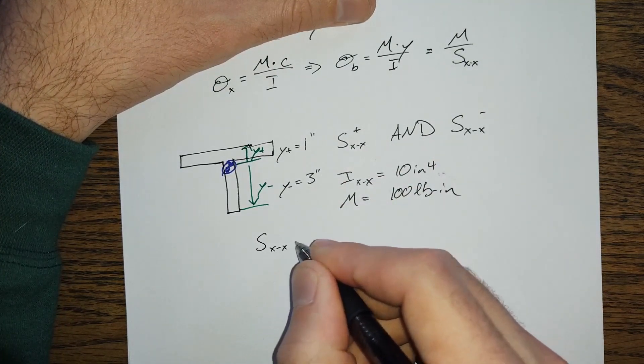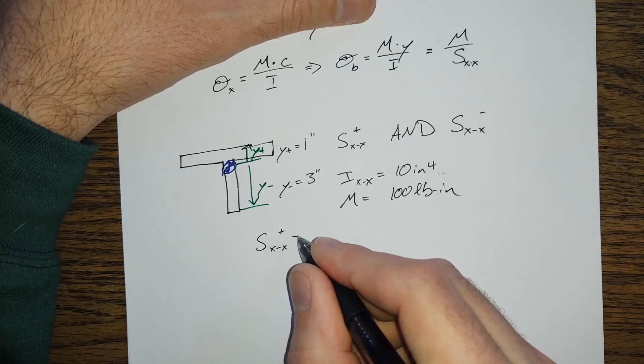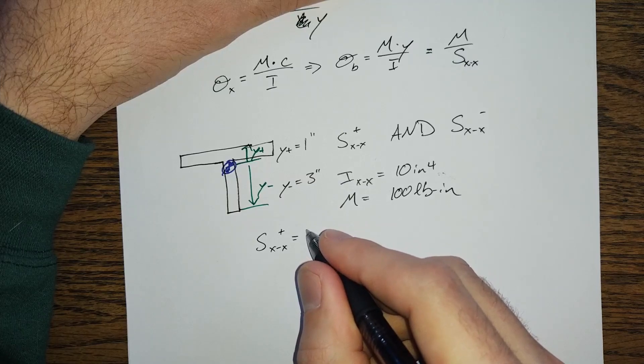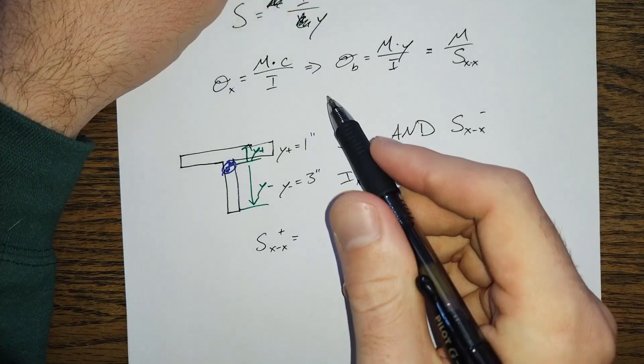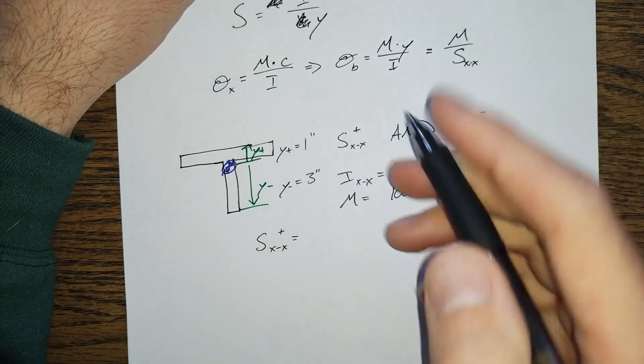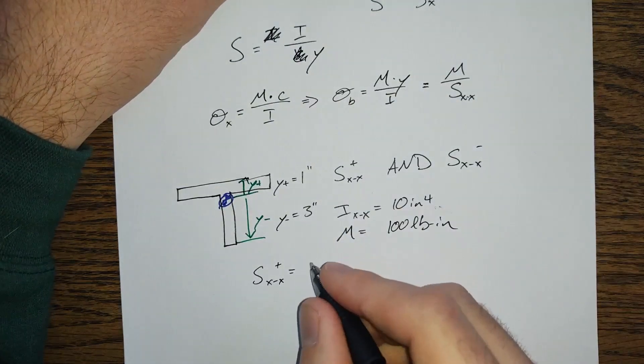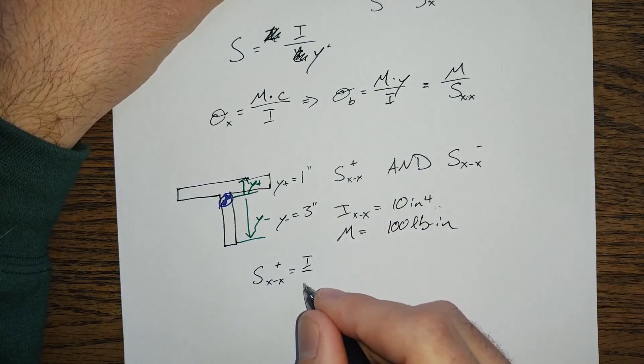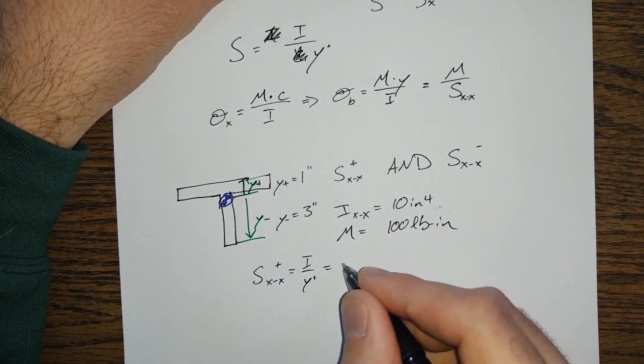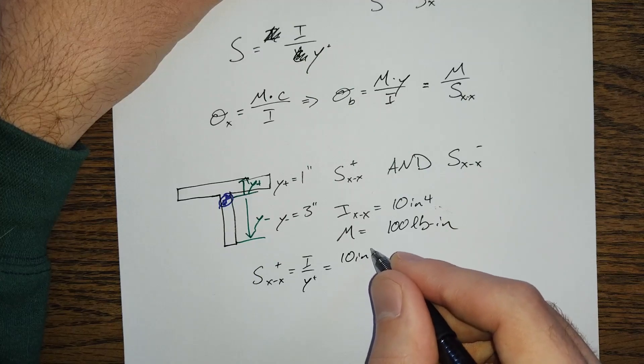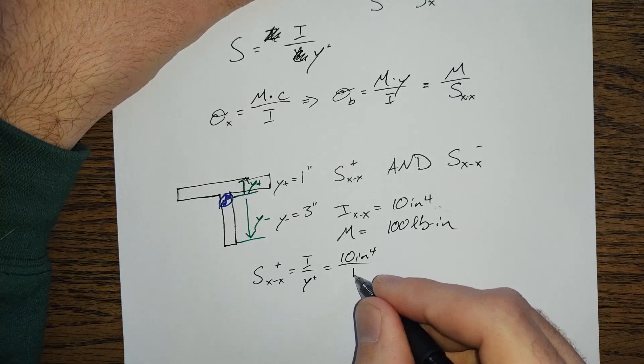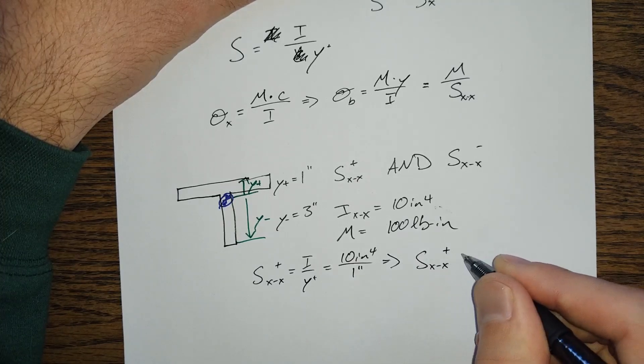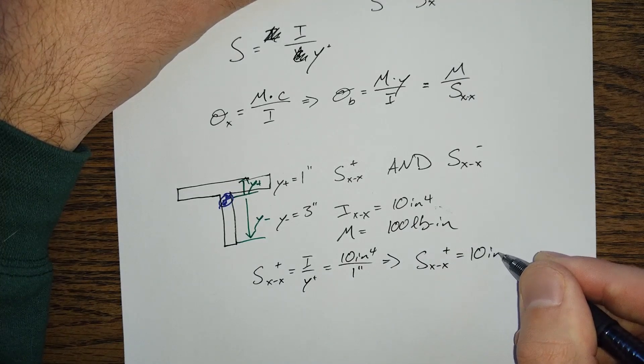Well, SXX positive is going to be I over Y, and this will be Y plus. So, I over Y positive is equal to 10 inches to the fourth, divided by 1 inch. SXX plus is equal to 10 inches to the third power.